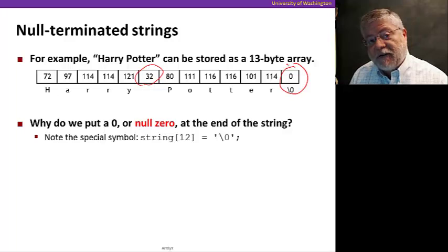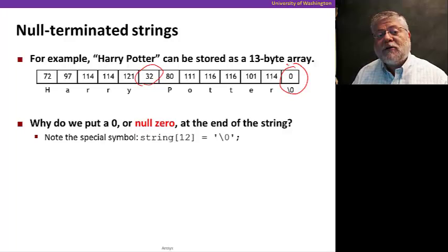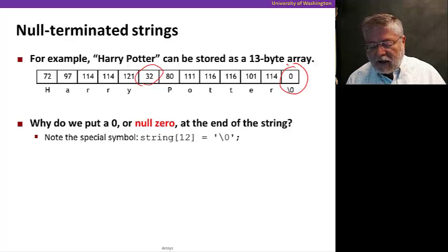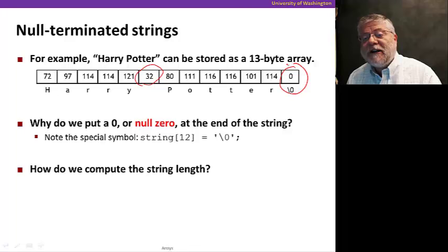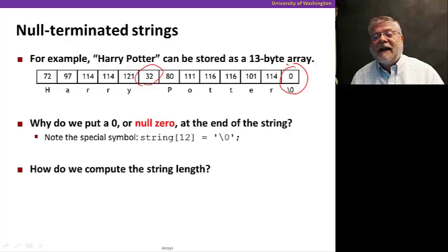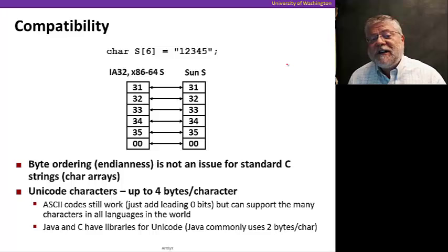So a string like Harry Potter, for example, would be represented by the following sequence of bytes. You'll notice that there is a byte for the space between the two names. The value of the code for a blank is 32 hex. And a zero at the end signifying the end of the string. So the string Harry Potter is a 13 byte array. The 12 characters, including the blank, plus a zero at the end to indicate the end. The reason we put a zero at the end, often referred to as a null zero, is so that we can tell the end of the string.